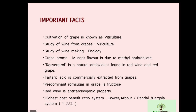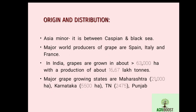The origin of grape is Asia Minor, between the Caspian and Black Sea. Major world producers of grape are Spain, Italy, and France. In India, grapes are grown in about more than 63,000 hectares with a production of about 16.67 lakh tons. Major grape-producing states in India are Maharashtra, Karnataka, Tamil Nadu, and Punjab.